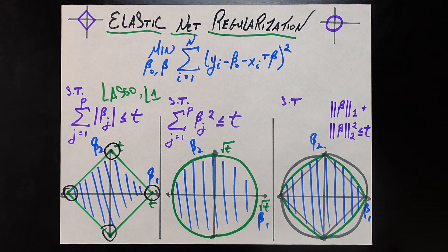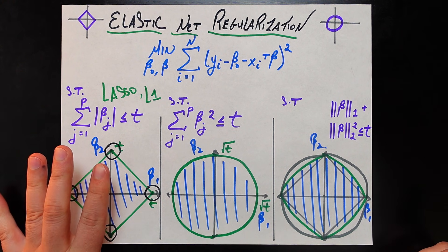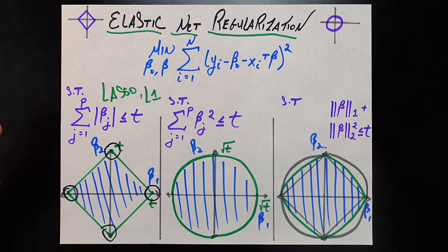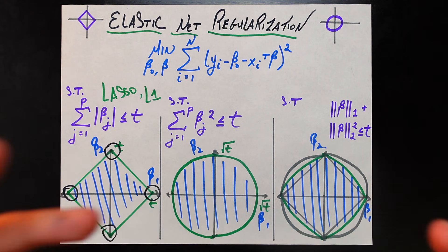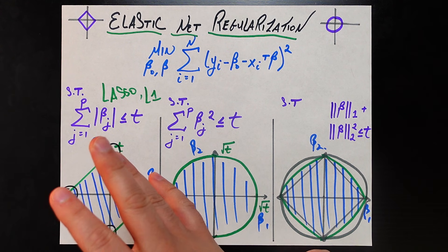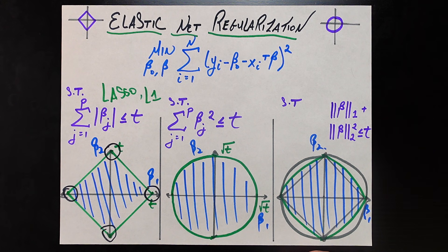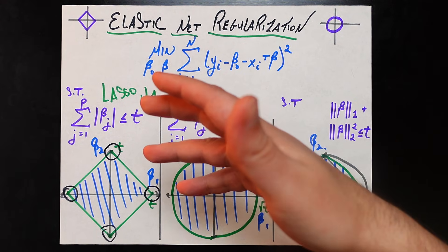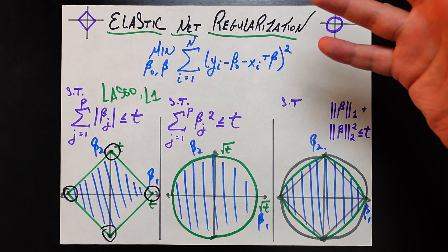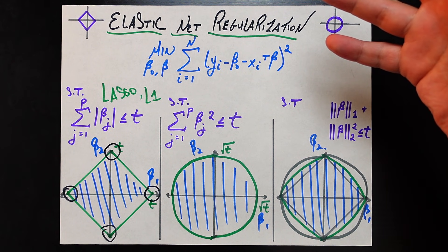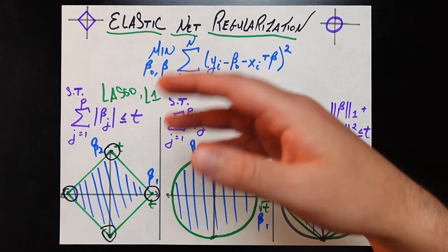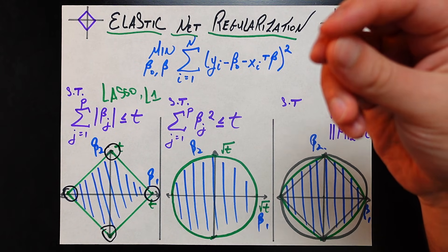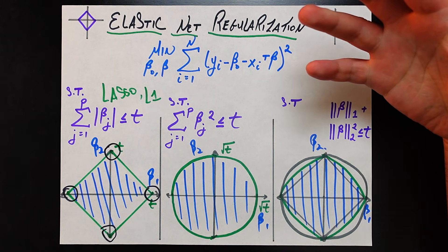That sparsity property lets us do feature selection: lasso sends the less useful variables' beta parameters to exactly zero and keeps others as positive or negative numbers, giving us information about which variables are useful. However, a con of lasso appears when two or more variables are very correlated. In that case, lasso arbitrarily sends one of them to zero and gives the other a nonzero value, which is not predictable and leads to unstable, skewed understanding.